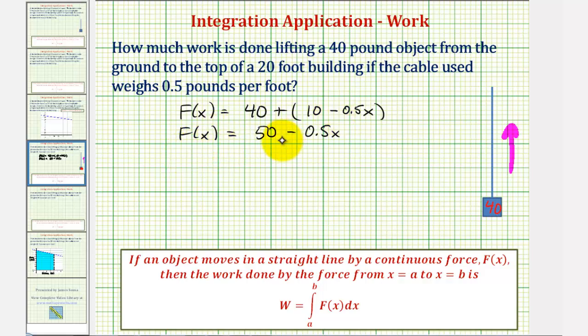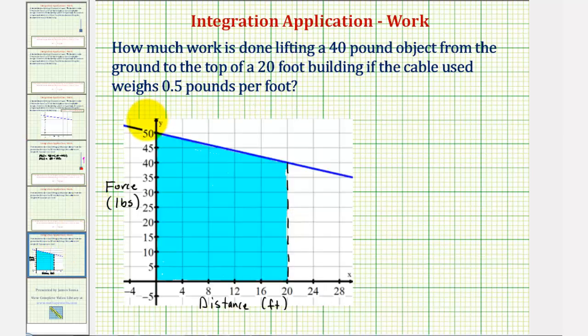Now before we find the work required to lift the object to the top of the building, let's look at the graph of this function on the coordinate plane. The function is graphed here in blue. Notice the horizontal axis is the distance traveled in feet, and the vertical axis is force in pounds.